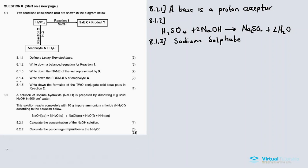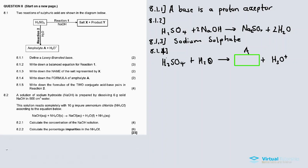8.1.4: Write down the formula of the ampholyte A. In reaction two, sulfuric acid reacts with water to produce an ampholyte A and a hydronium ion. What actually happened is that sulfuric acid donated one proton to the water molecule, producing the hydronium ion (H₃O⁺). After donating a proton, the remaining species is HSO₄⁻, which is the formula for ampholyte A.